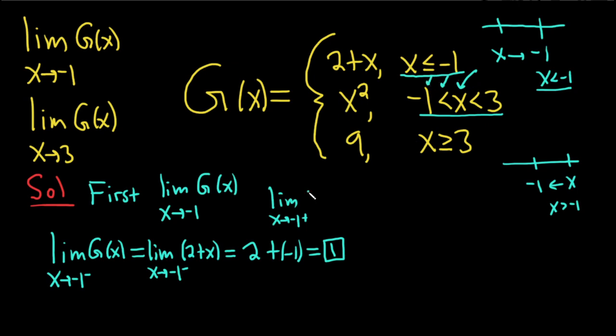So we use this piece here, x squared. Plug in the negative 1, so we get negative 1 squared, which is equal to 1. Boom, there it is.